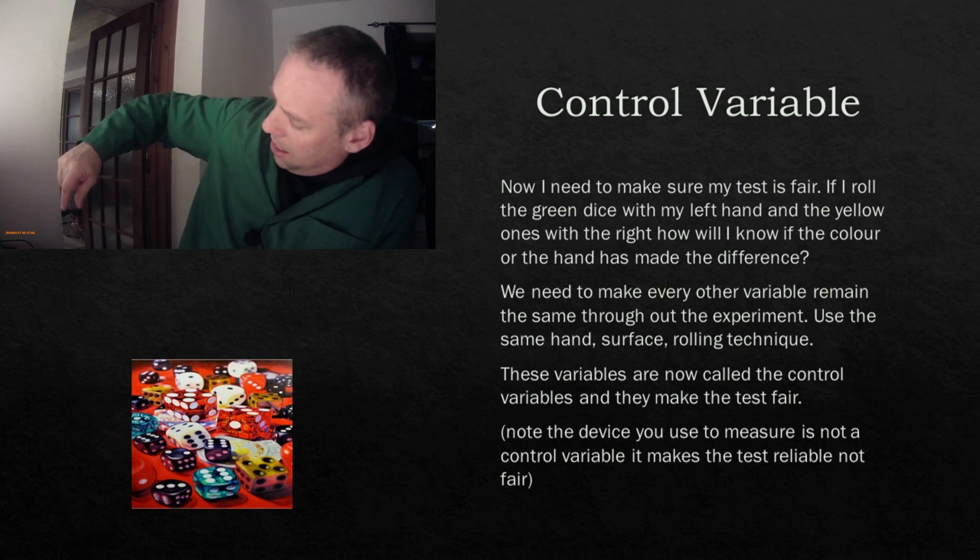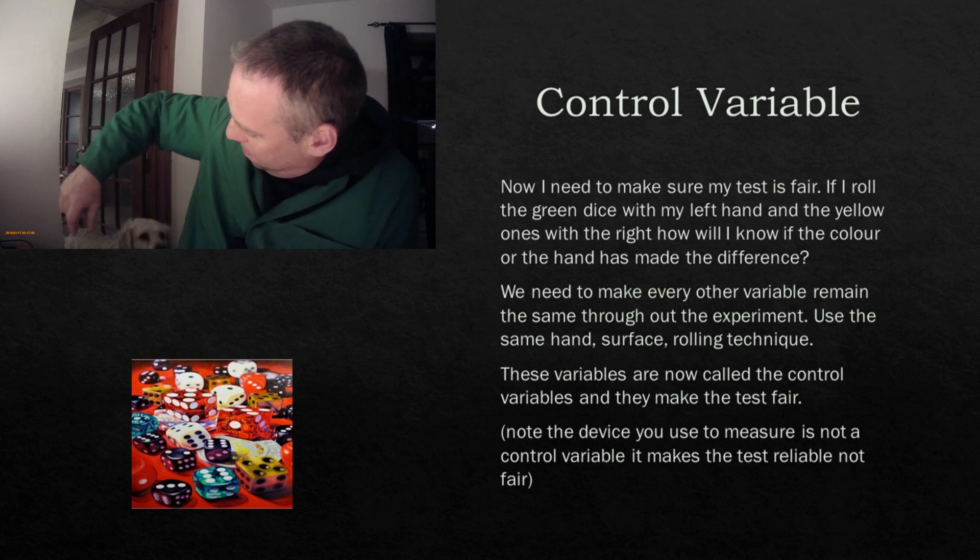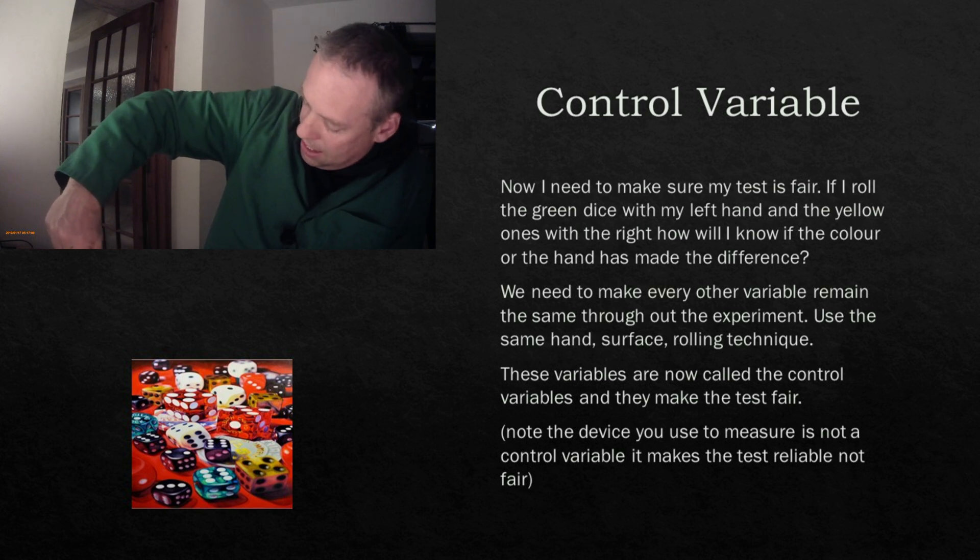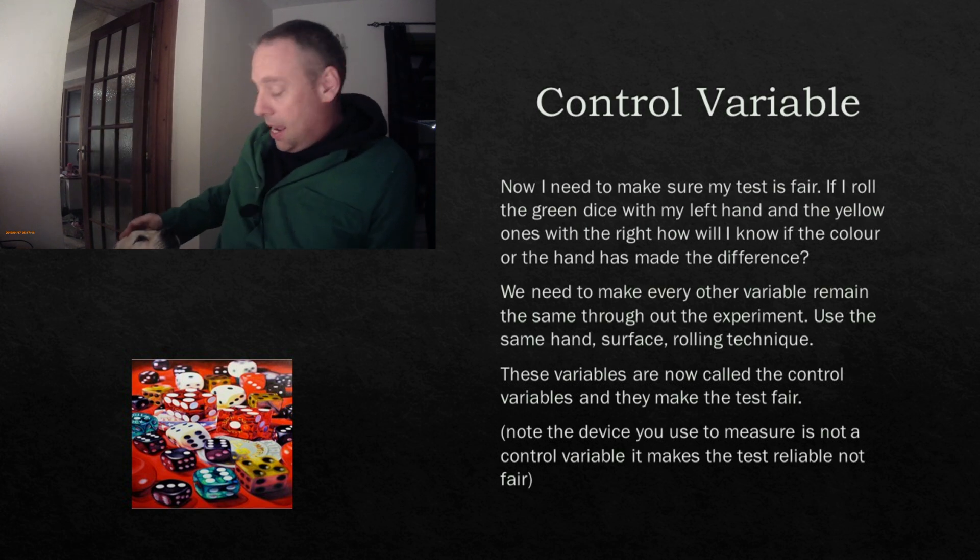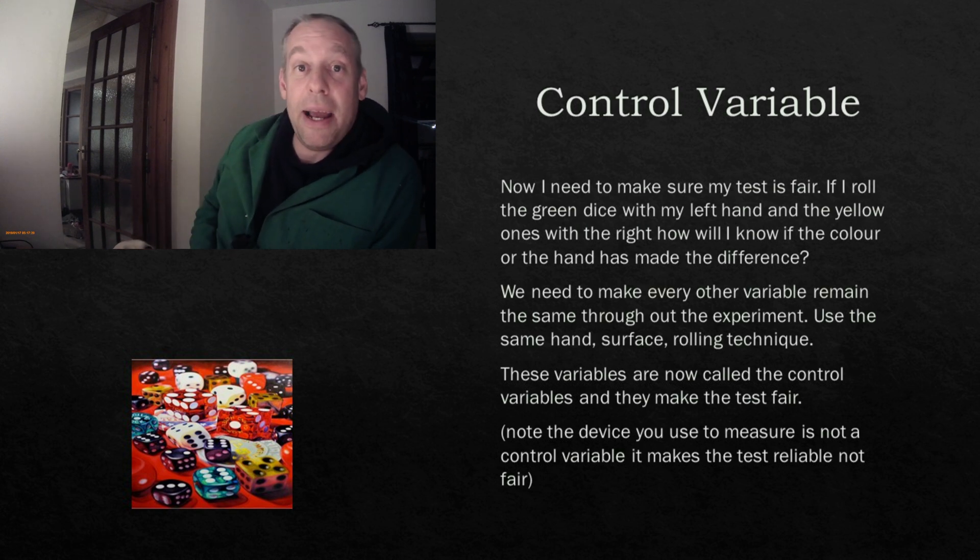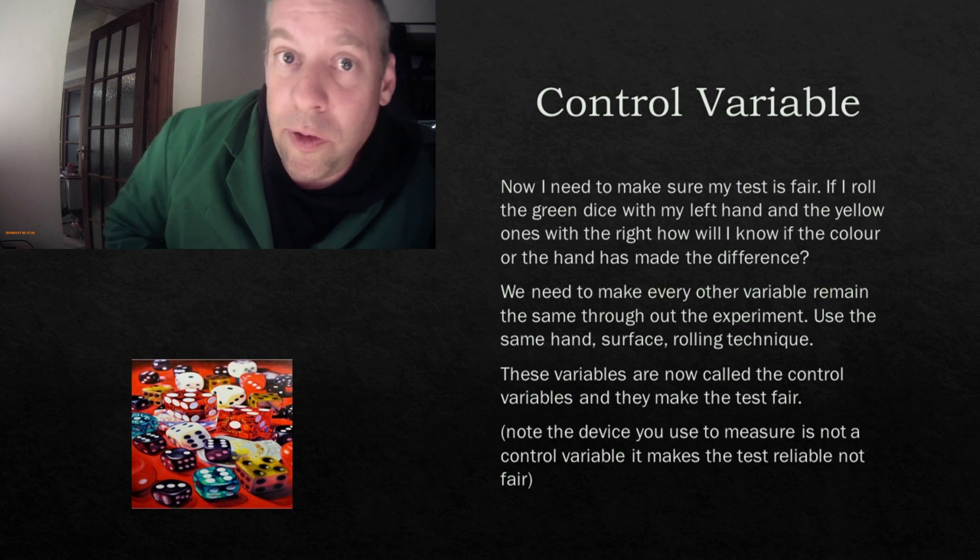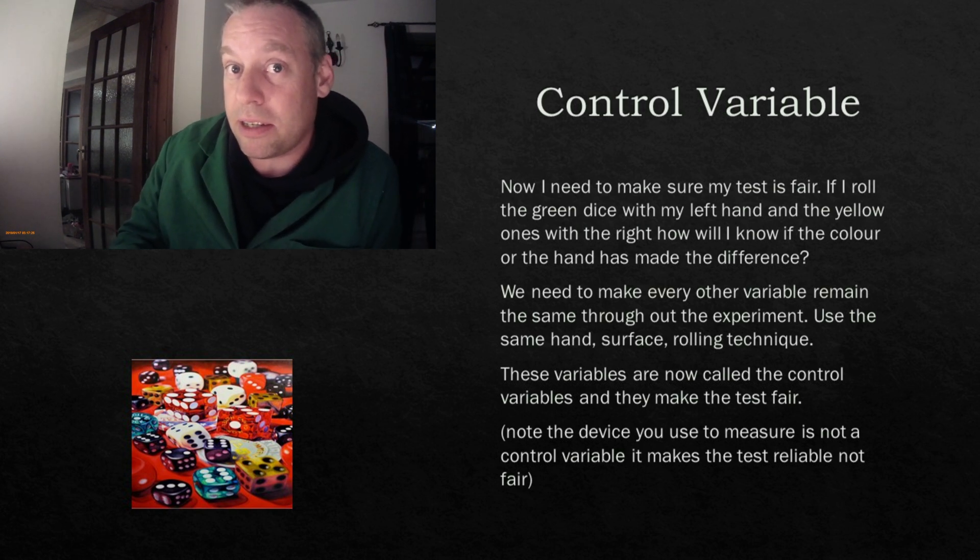Maxie, come up. Come say hello. Max, come here. Up. Up you come. Come on. Now Max here, he can't count to six. And therefore, if I use Max as my counter, I've made my experiment unreliable.